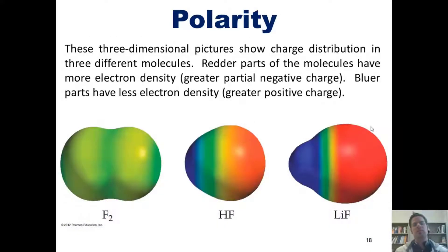These three-dimensional pictures show charge distribution in three different molecules. Redder parts of the molecules have more electron density, that is, a greater partial negative charge. And bluer parts of the molecule have less electron density, that is, a greater positive charge.